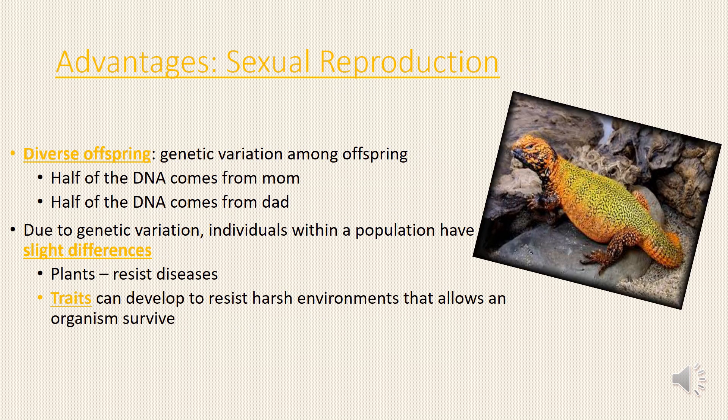Advantages of Sexual Reproduction: Diverse offspring and genetic variation among offspring. Half of the DNA comes from mom and half of the DNA comes from dad. Due to genetic variation, individuals within a population have slight differences.